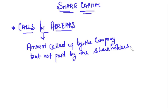Any amount that has been called by the company — the company received applications, allotted shares, and then called money on shares in installments. People have subscribed to the shares but have not paid the full money. The company has called up for the money but it has not been paid by the shareholders. If the amount is not called up by the company, that is a different case. Here the amount has been called but not paid.